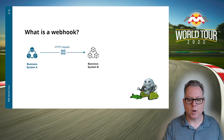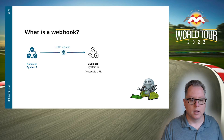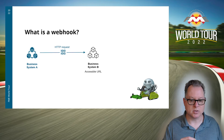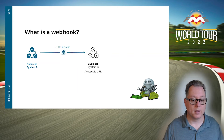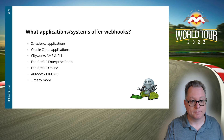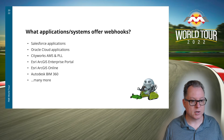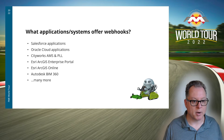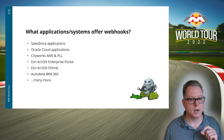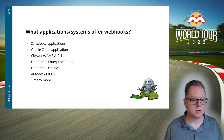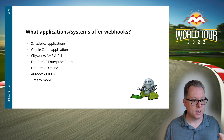But where is the request going? Business system B must have an application listening for messages on a standard web-accessible port, an accessible URL. Here are some examples of systems that offer webhooks — you'll notice CityWorks is on there, and that's what I'll be talking about primarily. But most cloud and large enterprise systems offer webhooks in some form.